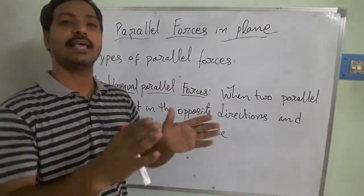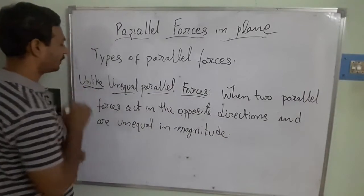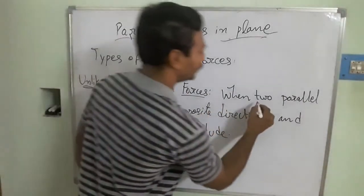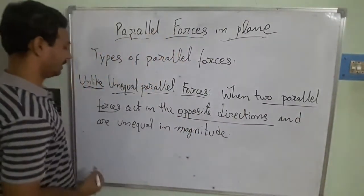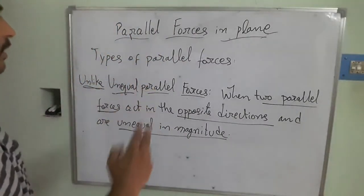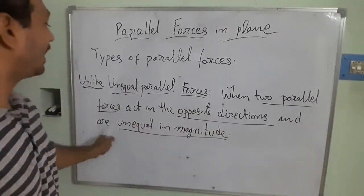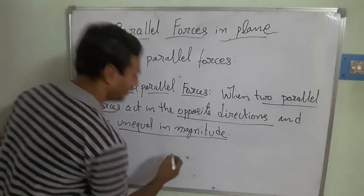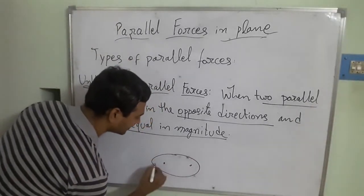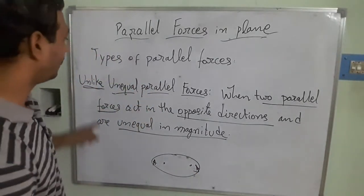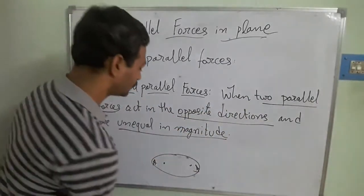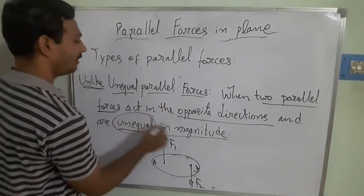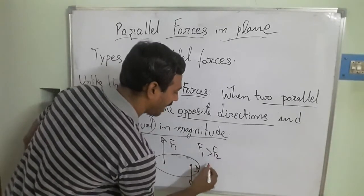The next classification is unlike unequal parallel forces. 'Unlike' means the forces are acting in the opposite direction. 'Unequal' refers to the magnitude. The definition: when two parallel forces act in opposite directions and are unequal in magnitude, they are called unlike unequal parallel forces. Taking a rigid body with points A and B — one force F1 acts in one direction and F2 acts in the opposite direction, where F1 is greater than F2 or F2 is greater than F1.